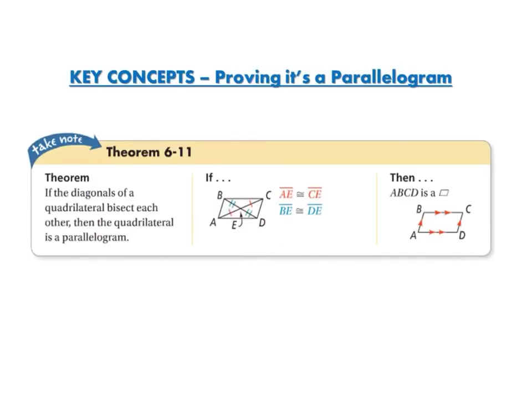The final theorem for proving that a quadrilateral is a parallelogram: if the diagonals of a quadrilateral bisect each other, then the quadrilateral is a parallelogram. If two diagonals cut each other exactly in half, then it is a parallelogram. The center point is point E, so line segment BE equals line segment DE, and line segment AE equals line segment CE.